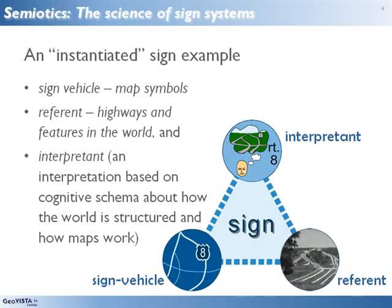In this simple example, the referent is a piece of the world. A map is a sign vehicle that stands for that piece of the world, and within it are many more specific sign vehicles that stand for specific features in the world. These include the highway shield, the number 8, lines of different color and thickness, and so on.